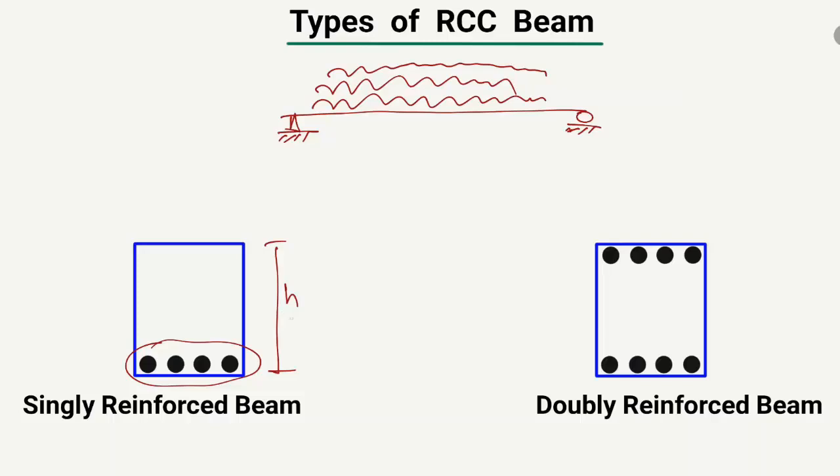What we do is provide reinforcement in both the compression and tension zones in order to increase the moment capacity of the beam. This beam is then known as the doubly reinforced beam, because the tension reinforcement alone was not able to take the load or the bending stresses. So to increase the moment capacity, we provide compression reinforcement as well as tension reinforcement.